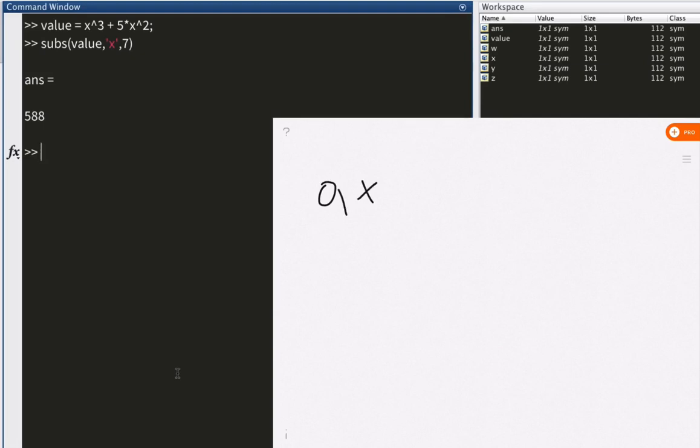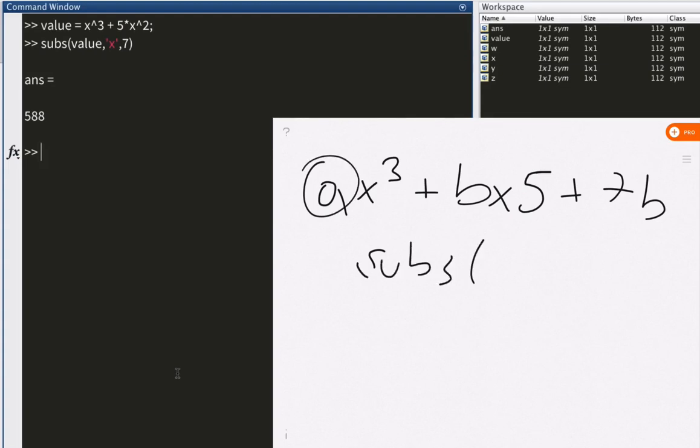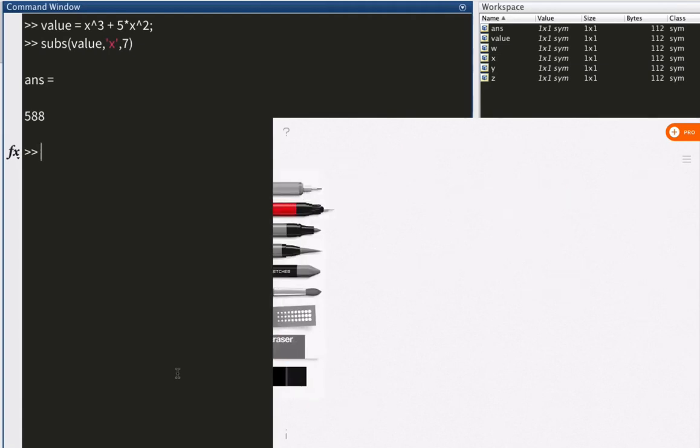You can, as you can see, for example, if it was something like this, a times x cubed plus b x 5 plus 7b. You would just simply say, well, I want to substitute a with any number, like 10. You can do it just like that. Then you wouldn't change anything, any other variable, which is x and b. They will just still be the same, which is a great functionality if you want to have it.